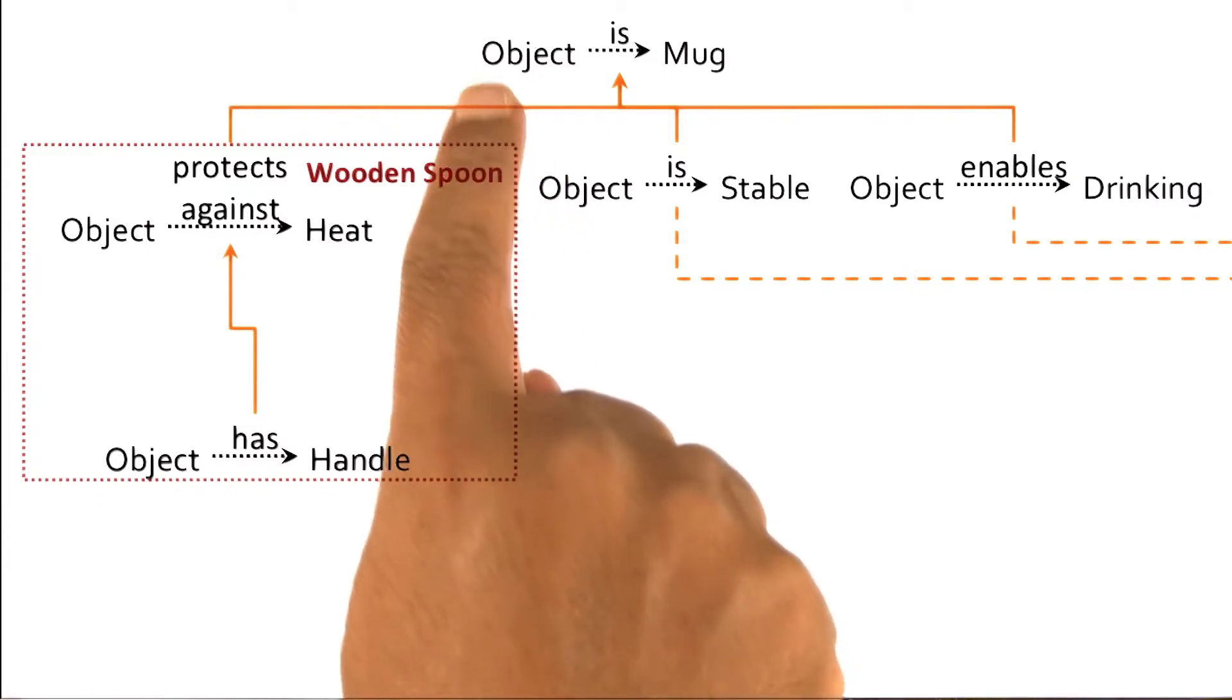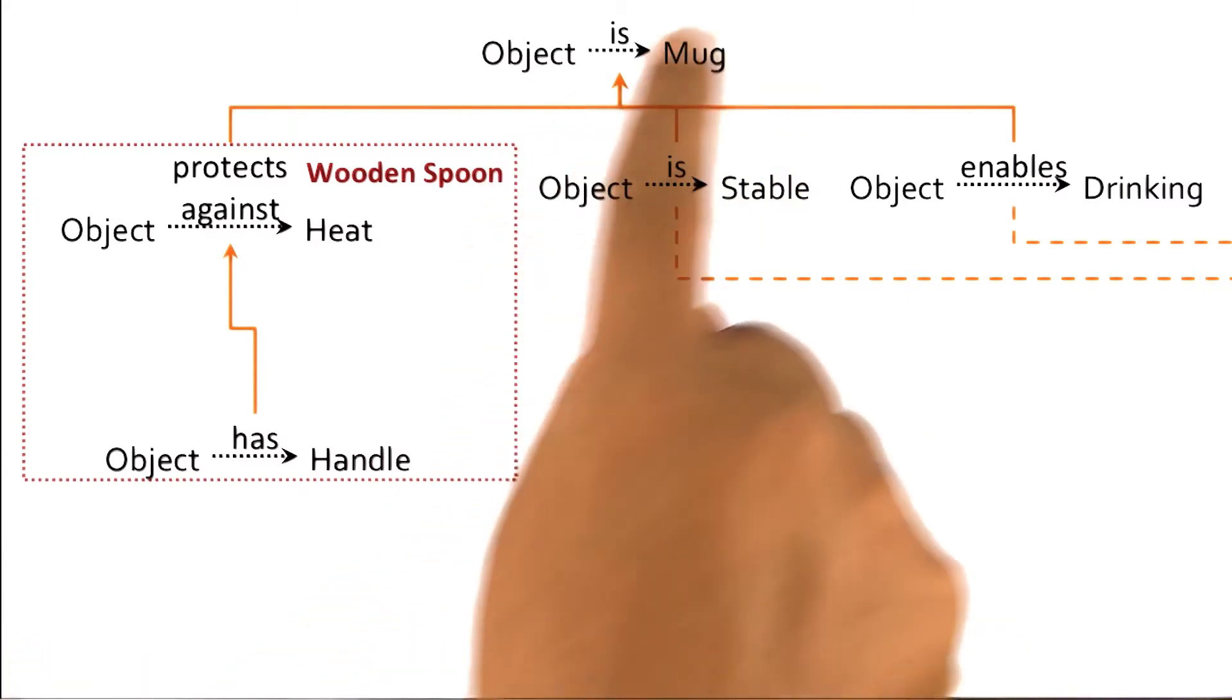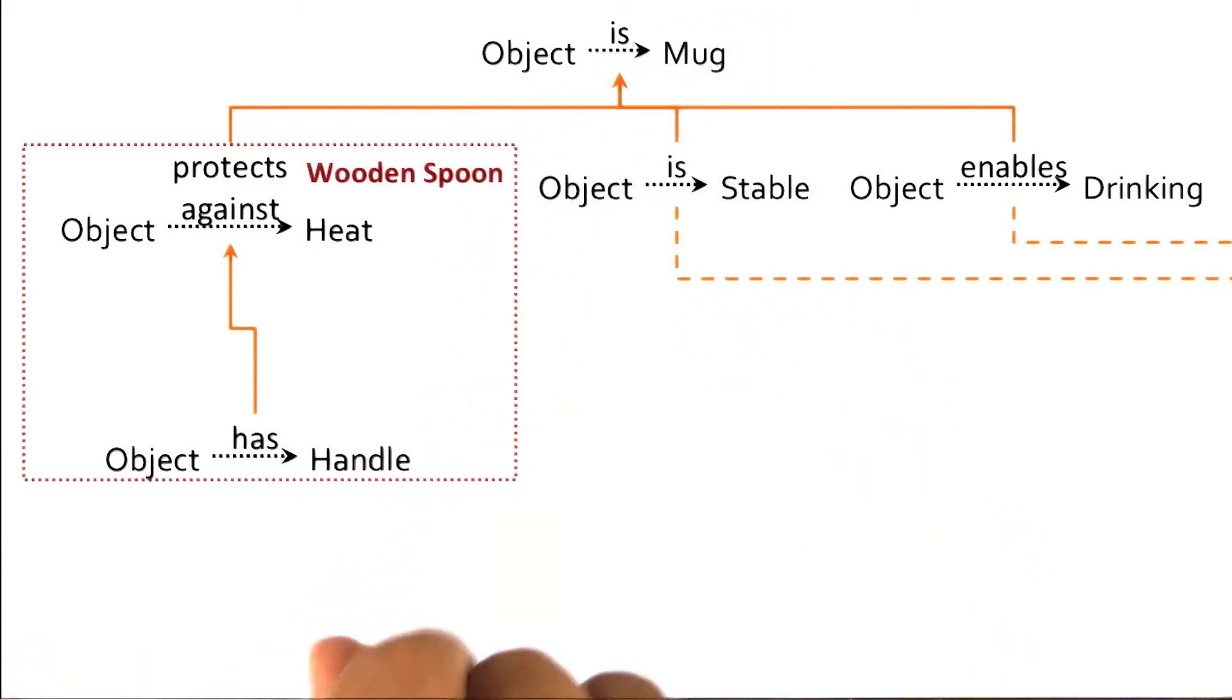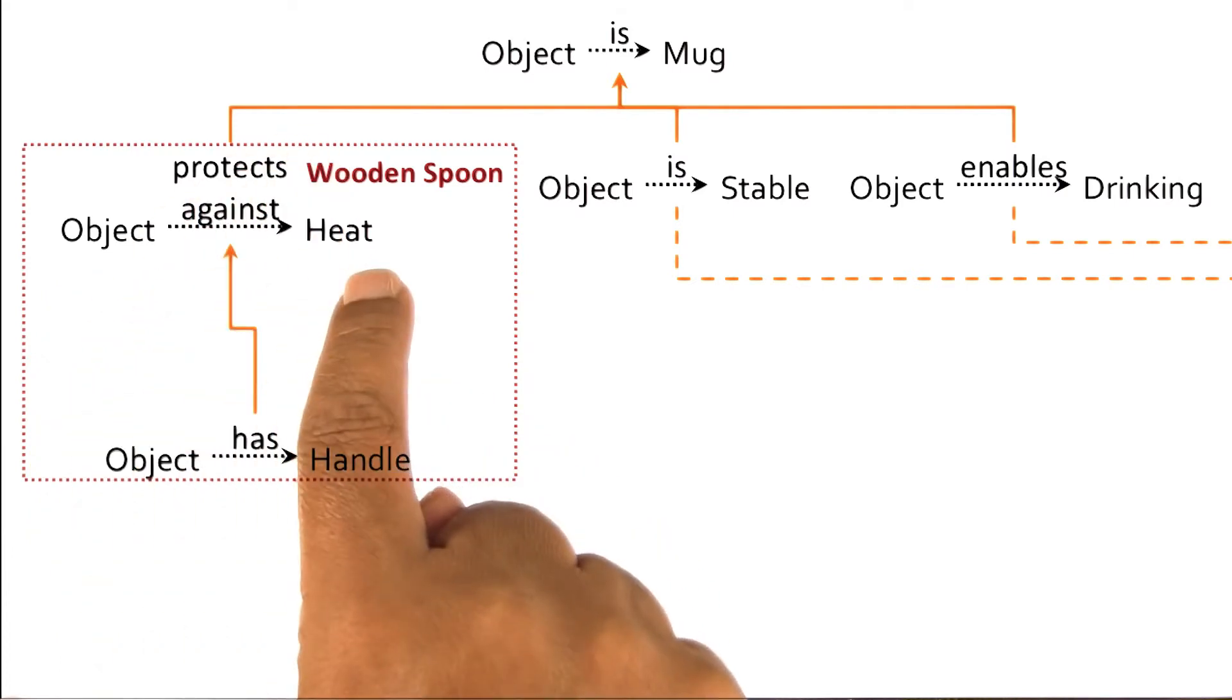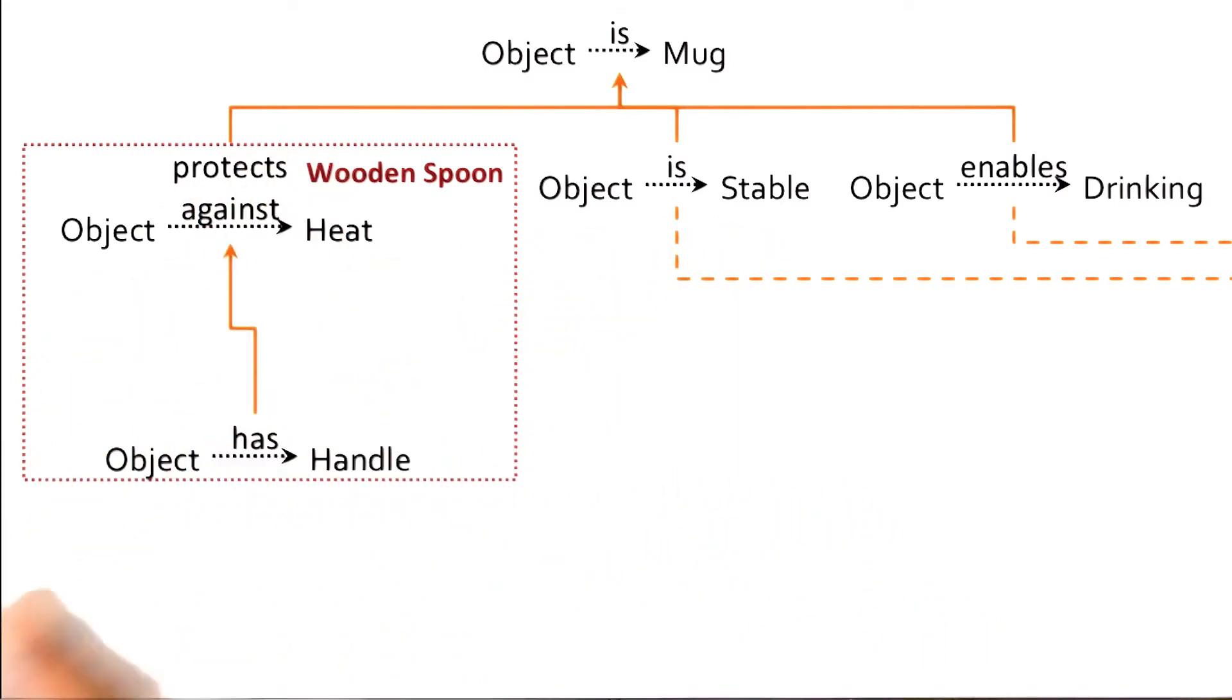The goal was to show that the object is a mug. Instead of putting in a lot of knowledge, the AI agent starts asking, what do we need in order to show that the object can protect against heat? What do we need in order to show that the object is stable? And then it goes about searching for that knowledge.